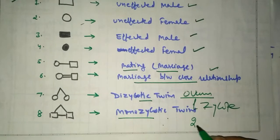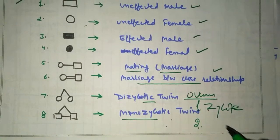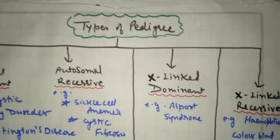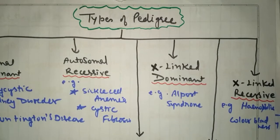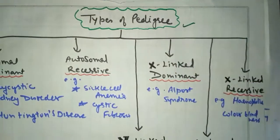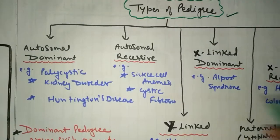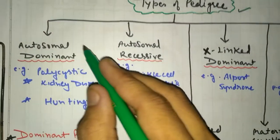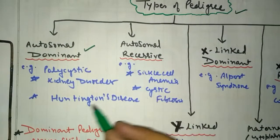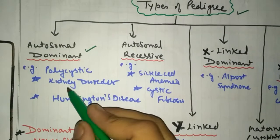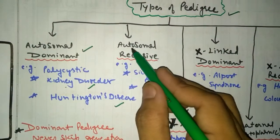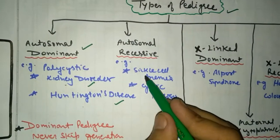Next is the types of pedigree. When we calculate pedigree analysis, we study these types. First is autosomal dominant - here are polycystic kidney disorder and Huntington's disease. Next pedigree is autosomal recessive, shown by sickle cell anemia and cystic fibrosis.